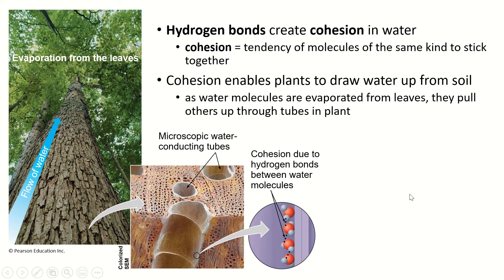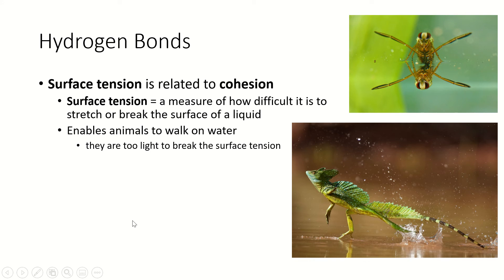All right. Hydrogen bonds, super strong together. They create cohesion, which is the tendency of the molecules to stick together. And that cohesion is what enables plants to pull water all the way up through, like through a tree, all the way up to the leaves. The water molecules evaporate from the leaves. And every time one evaporates, it pulls another molecule up through these tubes in the tree or the plant because they're held together by hydrogen bonds. Now this is not, cohesion doesn't move water around your body. You have a circulatory system for that.